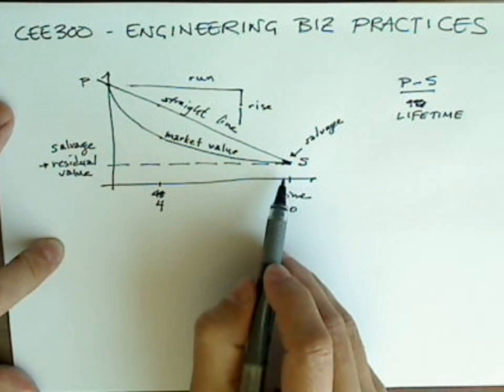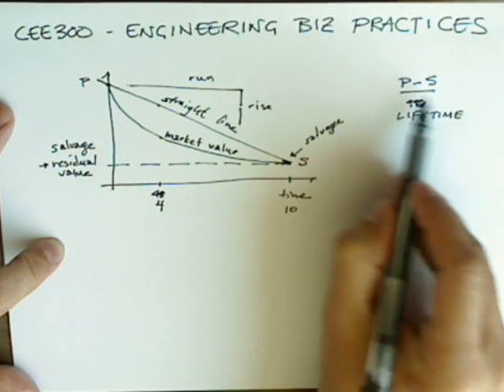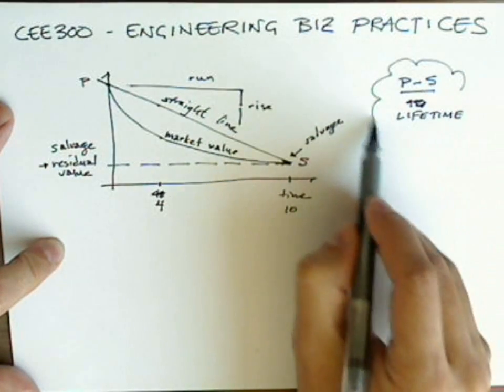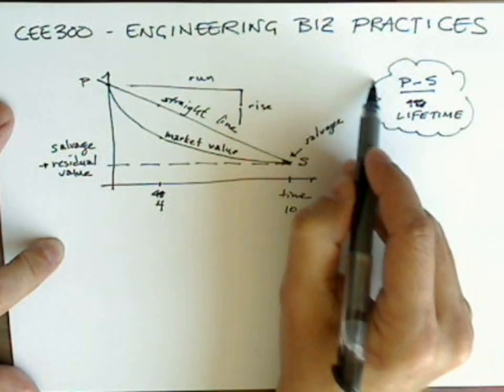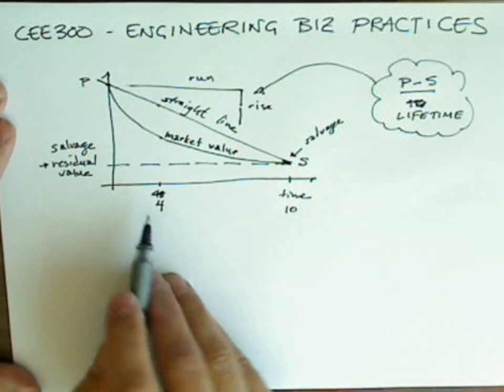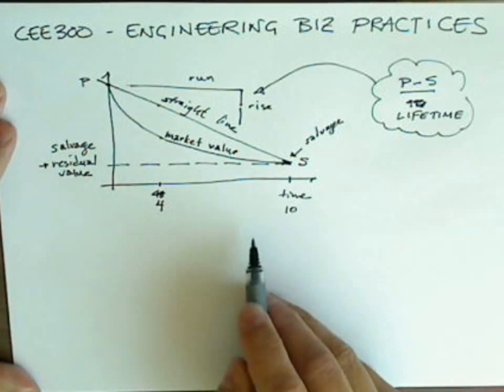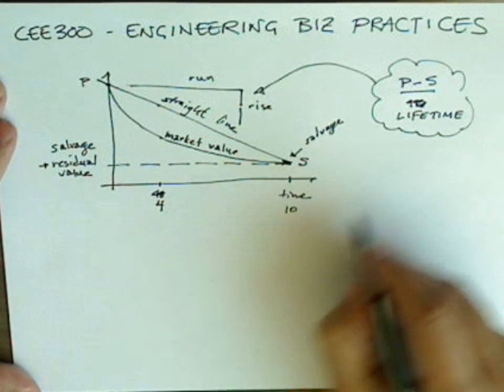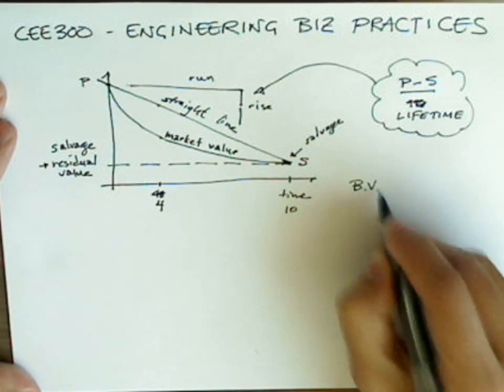In straight line depreciation, the amount of depreciation in any given year is this equation, P minus S over the lifetime. That's the slope of the line, and so the book value in four years would be, here's book value, straight line.